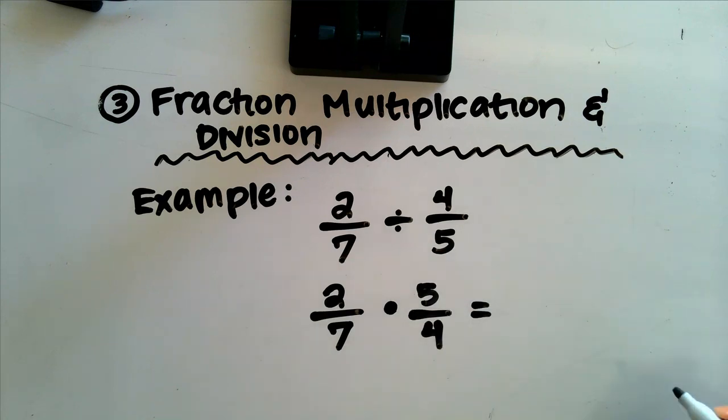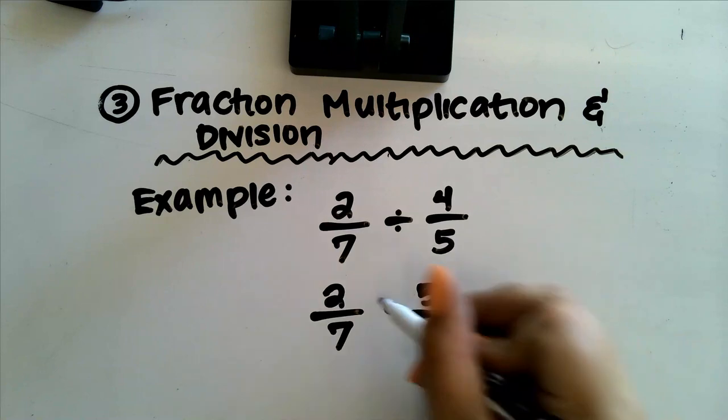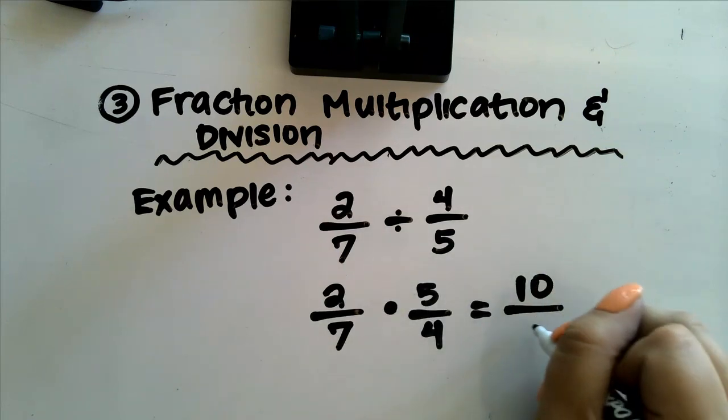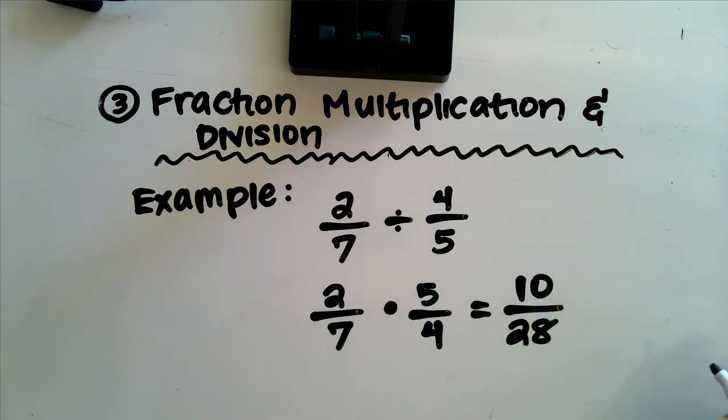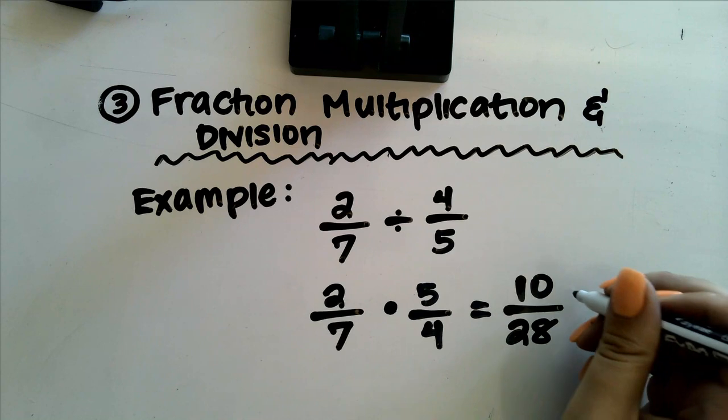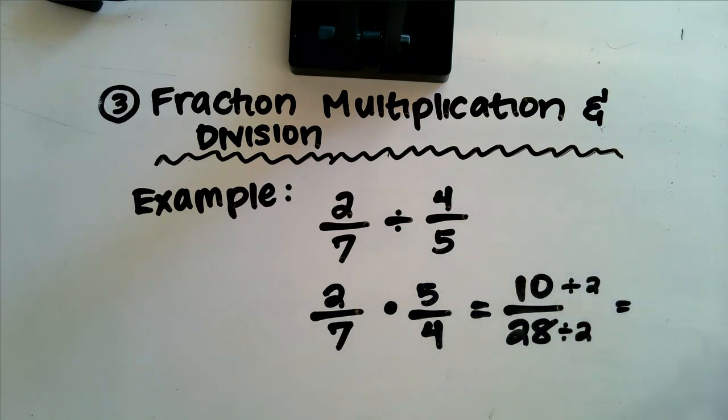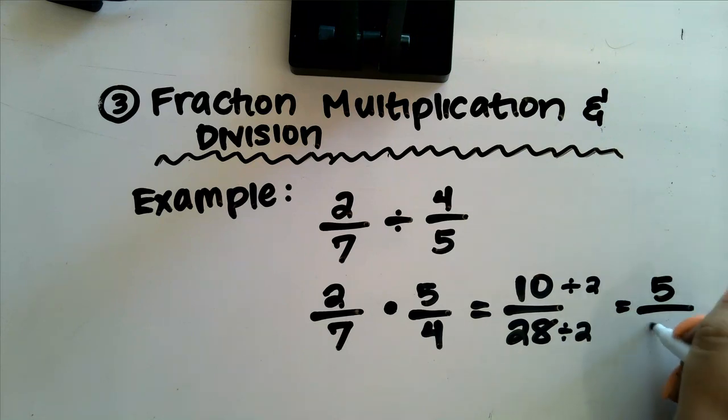And now, just like we talked about earlier in the video, we're just going to multiply our fractions together. 2 times 5 is 10 over 7 times 4, which is 28. And I know that I can definitely reduce this fraction down a little bit. So I'm going to divide both our numerator and our denominator by 2. We're creating that equivalent fraction. 10 divided by 2 is 5, and 28 divided by 2 is 14.